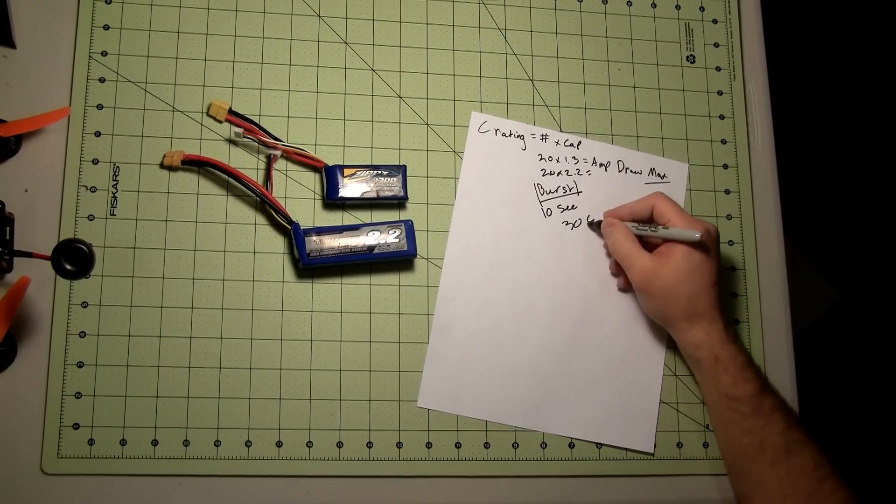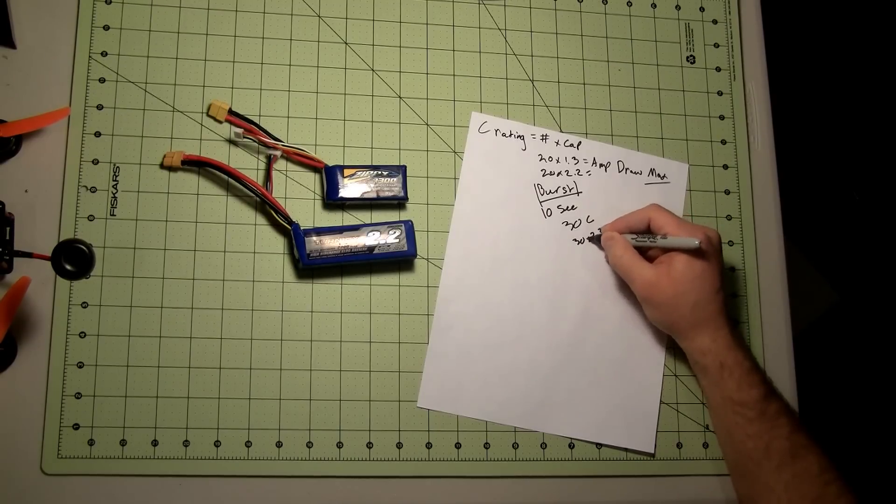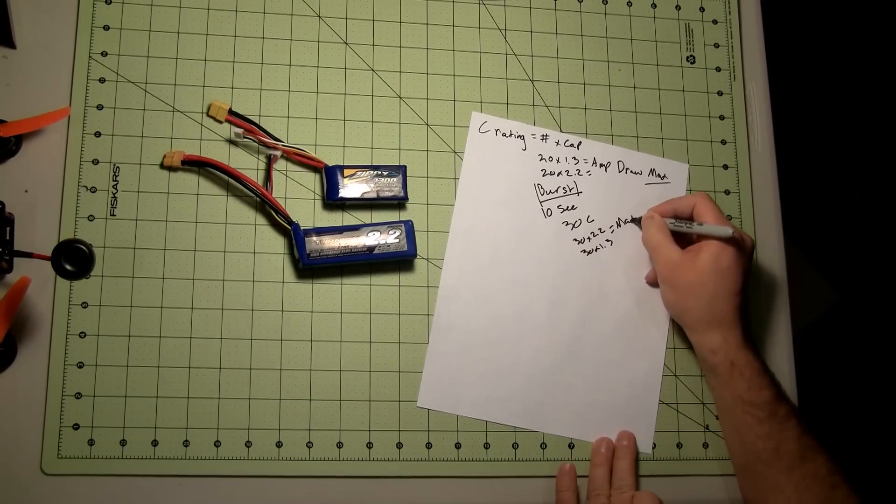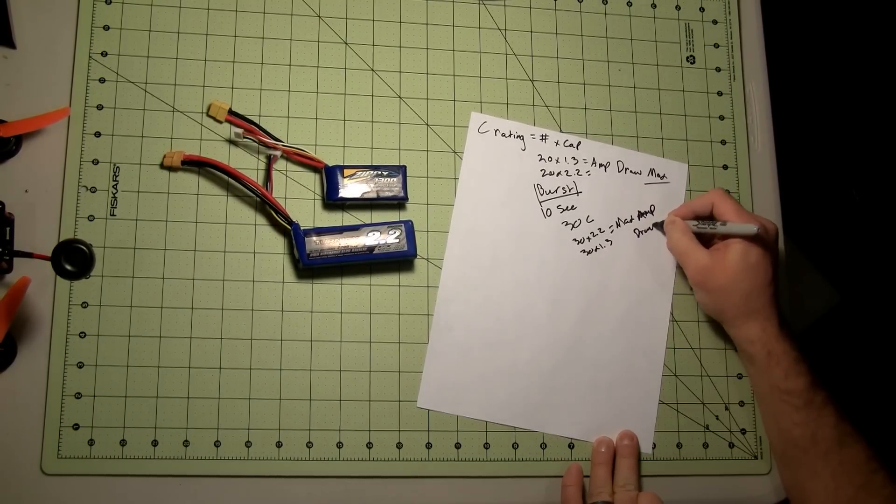So for 10 seconds these batteries can put out 30C. The 30C gives you 30 times the capacity. So it would be 30 times 2.2 or 30 times 1.3. Max amp draw.